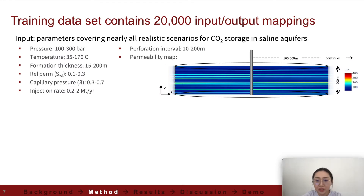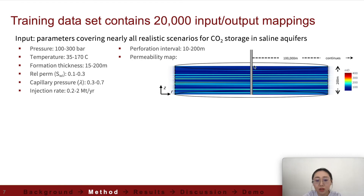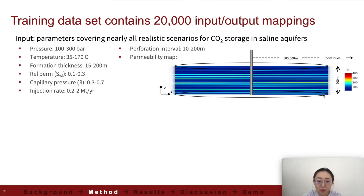This model sequence is trained with a dataset containing numerical simulation runs with different combinations of input variables. The input parameters sampled cover nearly all realistic scenarios for CO2 storage. For example, we have initial pressure from 100 to 300 bars, temperature from 35 to 170 degrees Celsius, formation thickness from 15 to 200 meters, and more. We also use SGEMS — Stanford Geostatistical Modeling Tool — to create a large variety of random probability maps with different correlation lengths, probability map appearance, probability mean, and standard deviation, covering many ranges where CO2 might be injected into the subsurface.